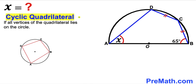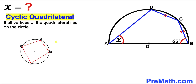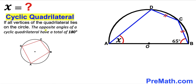Let's get started. Let's recall the definition of a cyclic quadrilateral. If all the vertices of a quadrilateral lie on the very same circle, then such a quadrilateral is called a cyclic quadrilateral. As we can see, all points A, B, C, and D lie on the same circle. Furthermore, the opposite angles of a cyclic quadrilateral have a total of 180 degrees.